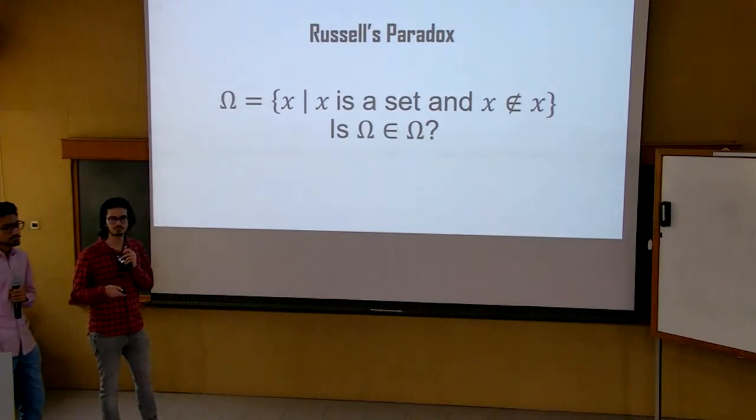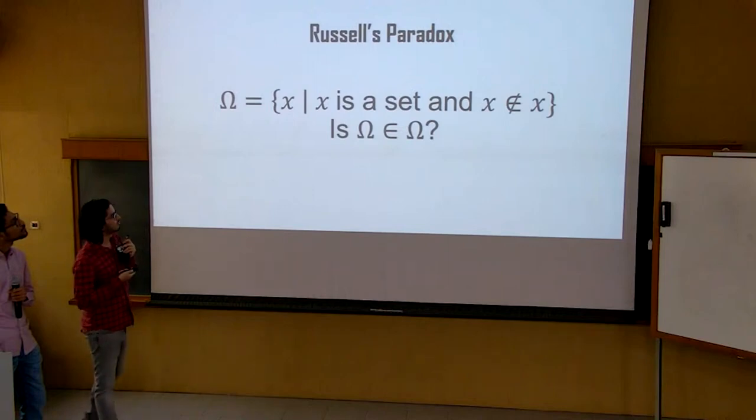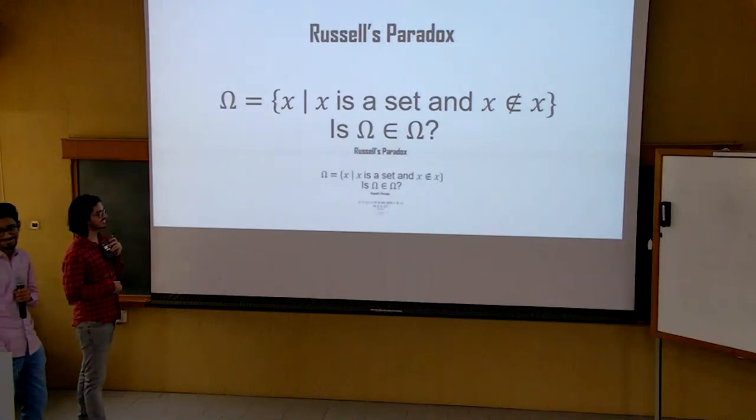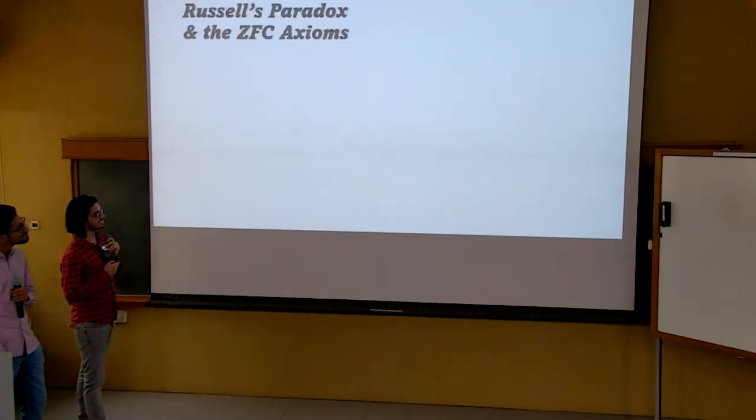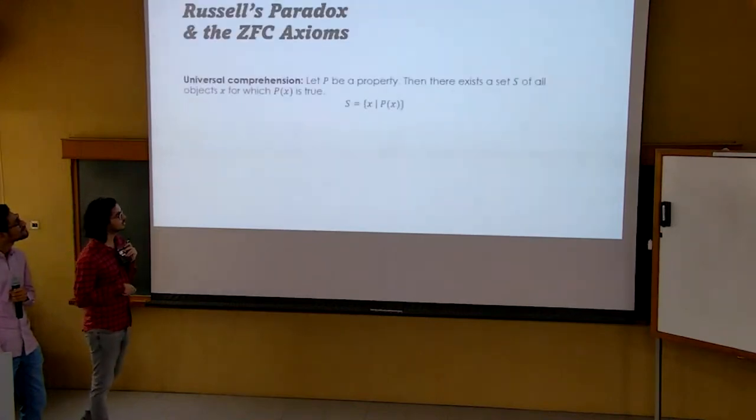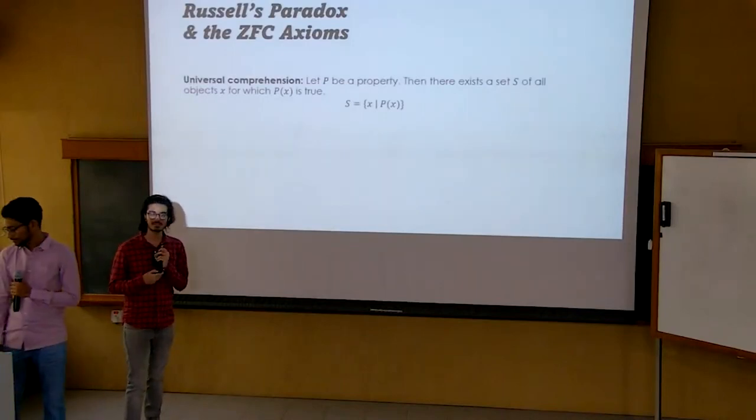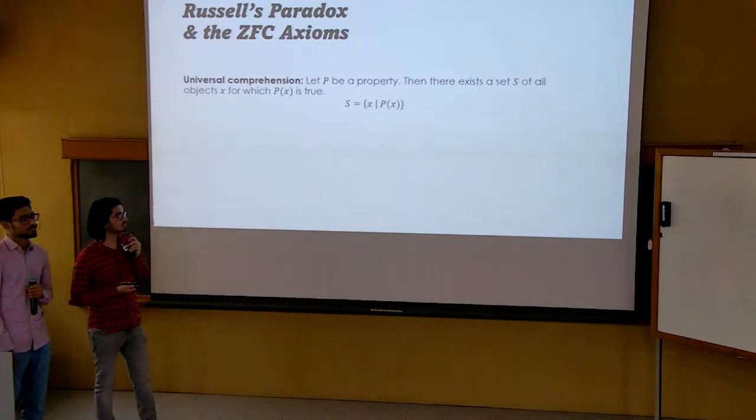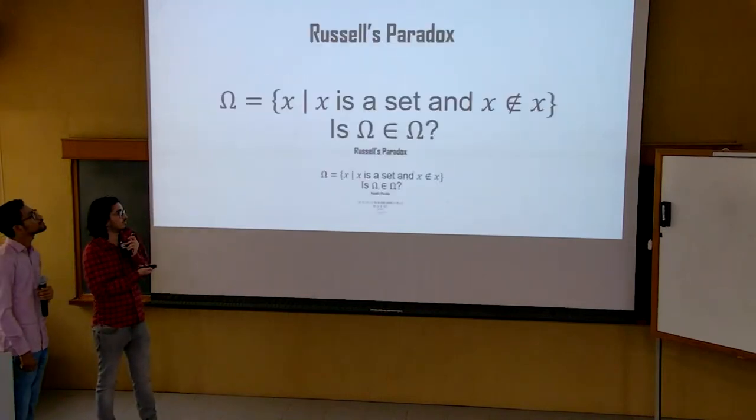The ZFC axioms by Zermelo, Fraenkel, taken with the axiom of choice. And specifically we choose the flavor of ZFC which considers every object to be a set, including natural numbers defined as sets. We see Russell's paradox demonstrates the failure of universal comprehension, where we are allowed to construct the set of all objects satisfying any given property. As we just saw, it leads to meaningless, confusing sets.